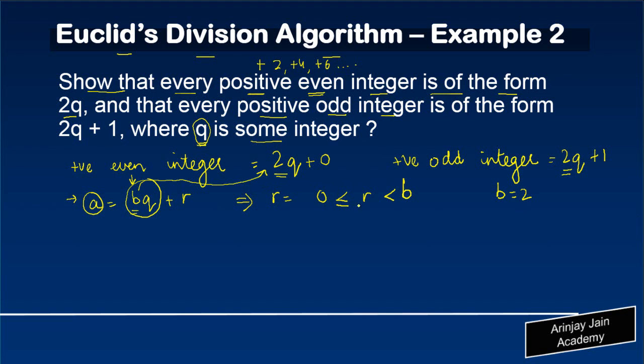Now, if b is equal to 2, that means what? r can lie between 0 greater than r, but it is less than 2, but r is also a positive integer, so what are the values which r can take? r can have a value which is either 0 or 1, because these are the two which are going to satisfy this formula.